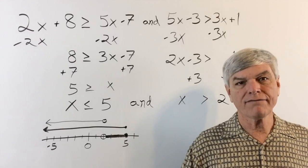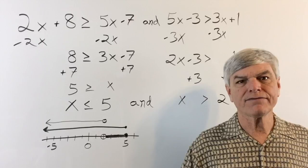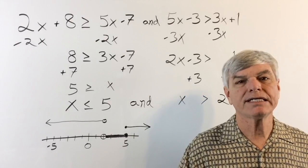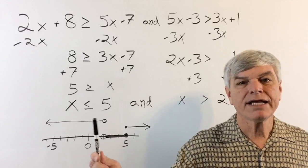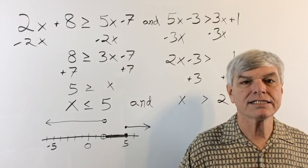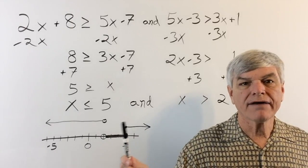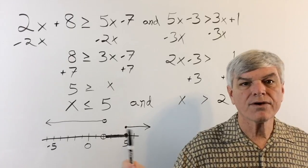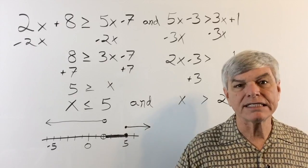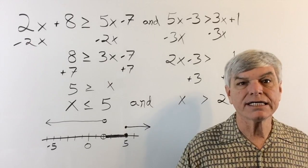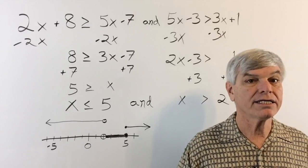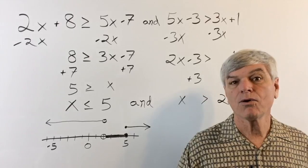What if both lines go off in opposite directions but there is no overlap? If we reverse the signs of our original two equations, we get a situation where there should be overlap between the endpoints but there isn't — the lines go away from each other. Since AND requires both to be true and there is no overlap, the answer is the empty set, or no solution.